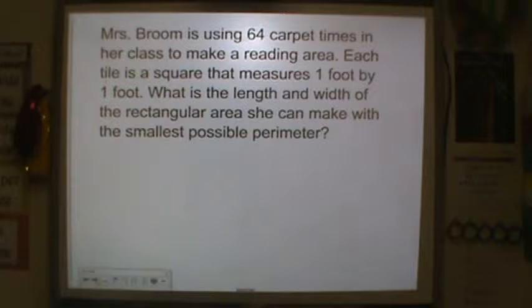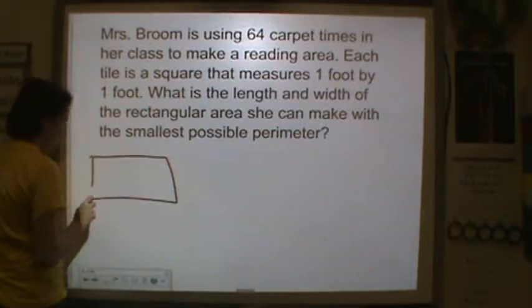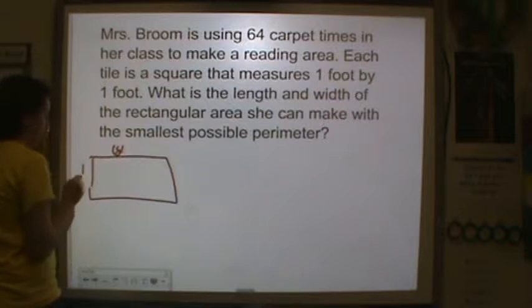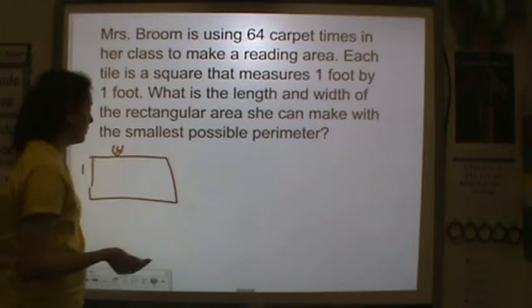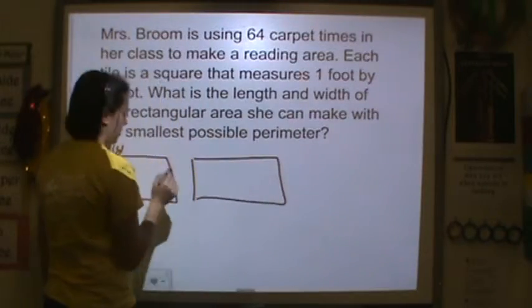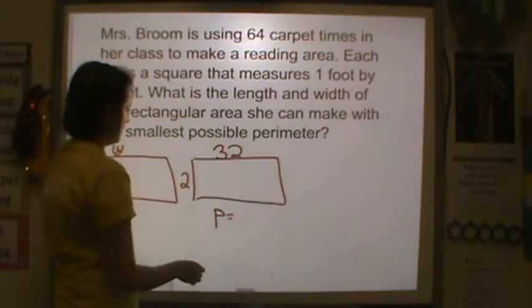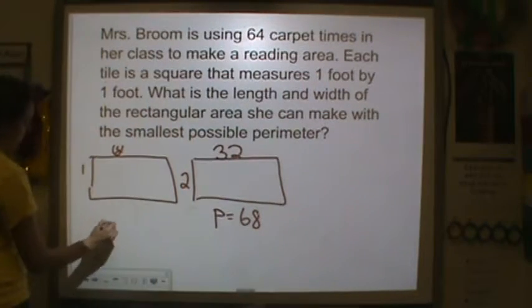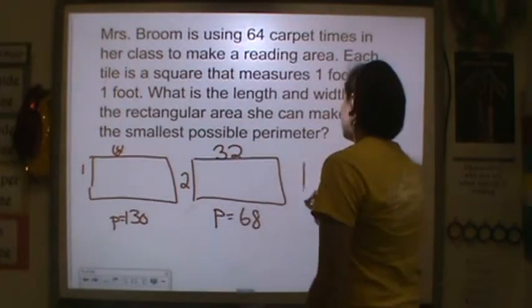All right. Mrs. Broom is using 64 carpet tiles in her class to make a reading area. Each tile is a square that measures one foot by one foot. What is the length and width of the rectangular area she made with the smallest possible perimeter? Well, we just did 64. So we had 64 and 1. Well, I know that would make a huge perimeter because 64 plus 64 plus 1 plus 1, that'd be huge. That probably wouldn't work. Our other design that we just did was 2 times 32. That gave us a perimeter of, let's see, 68. This perimeter, 65 plus 65, that'd be 130. So that wouldn't work. Too big.